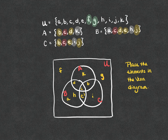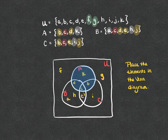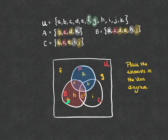One thing to point out: when it comes to our subsets, notice that set A is the entire circle for A. When I highlight that, notice that elements B, C, D, and K are all in subset A — they all fall inside that circle. When I highlight set B, notice that elements A, C, D, E, H, and J are all in subset B. Also notice that in the overlapping region of A and B in the diagram, elements C and D appear — that is where those two subsets intersect.